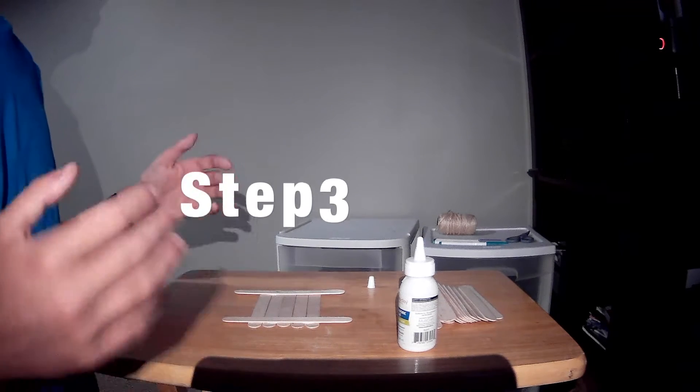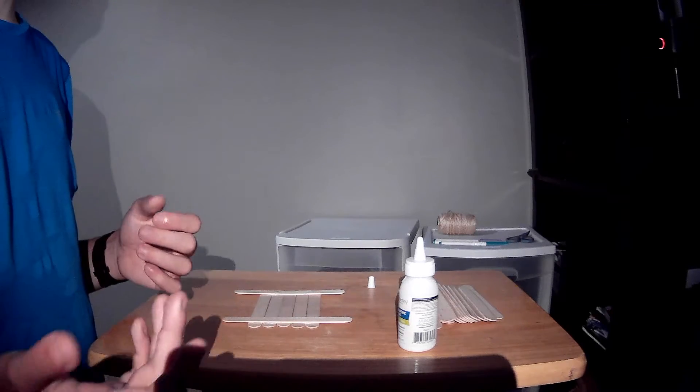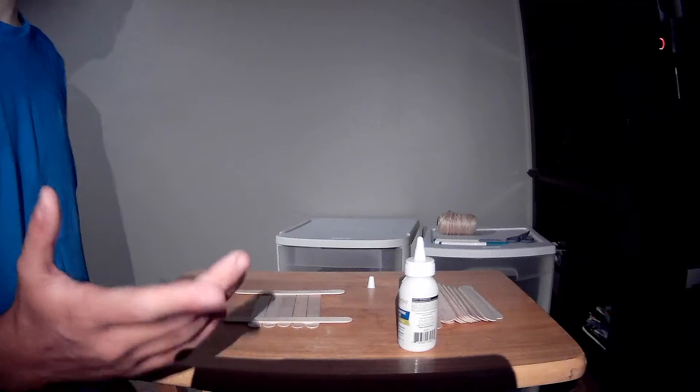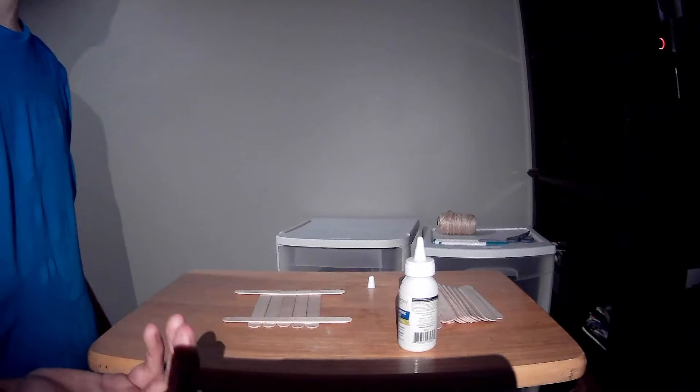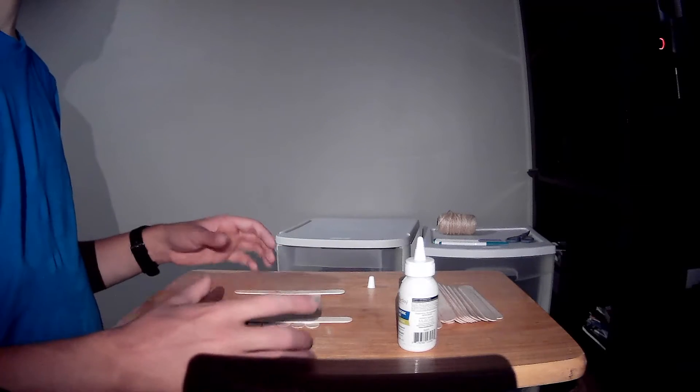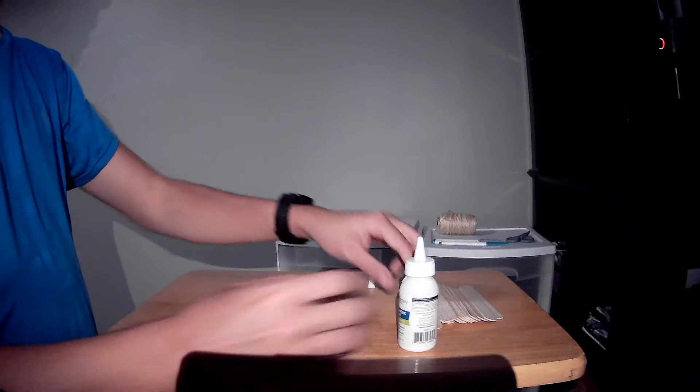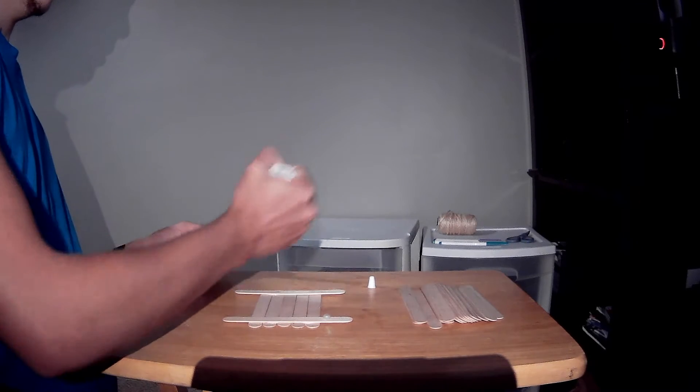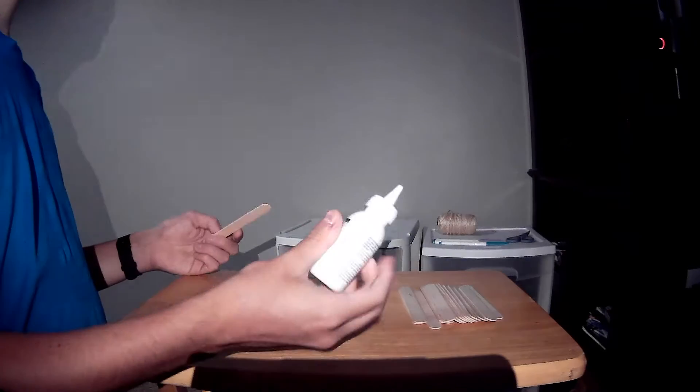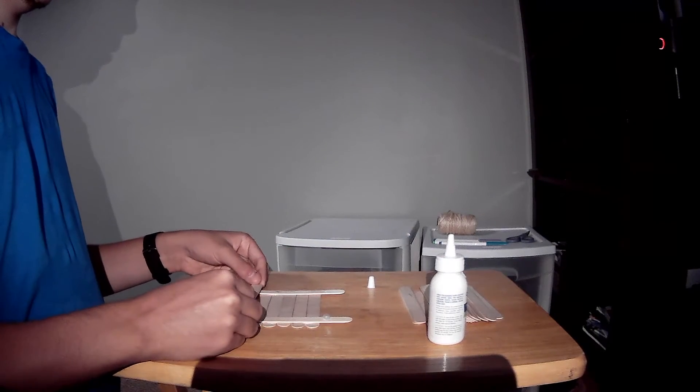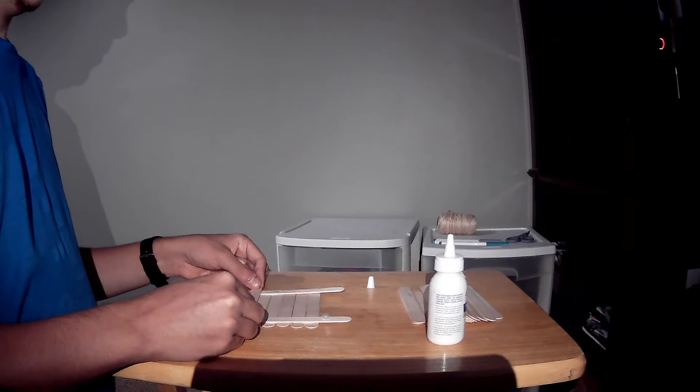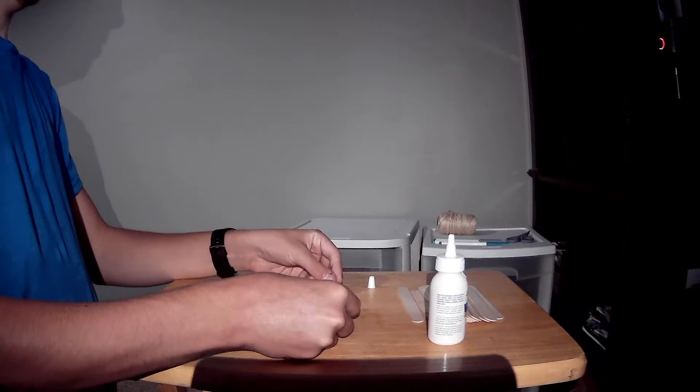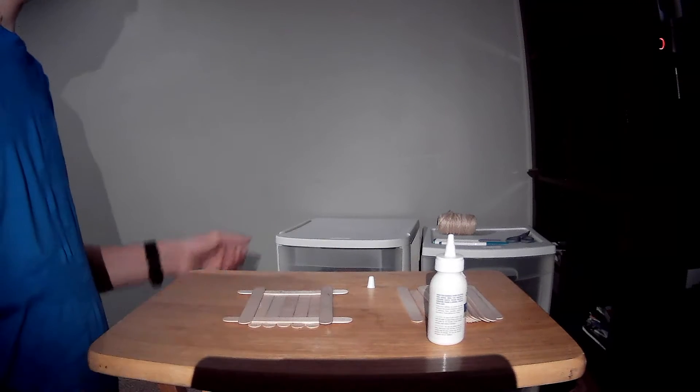Now there's step three. You want to add glue to the four corners of the popsicle sticks you placed in step two. You want to place two new popsicle sticks on the top of the opposite ends. Now, one thing you need to keep in mind is it takes a little bit for the glue to dry, so be careful when adding new layers to not shift everything around. So, what you want to do, just little dots on each corner.